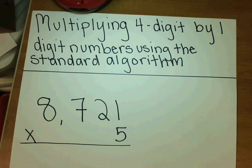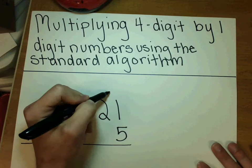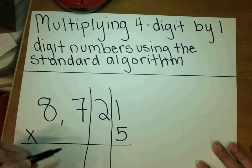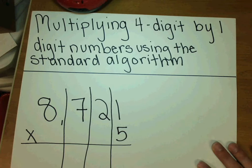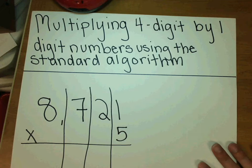We're going to jump right in on how we use the standard algorithm. One thing I always start with in class is making sure that I put some lines down. These lines just help me — and help students — keep track of place values, because as we're doing multiplication we begin to carry over into different place values, so these lines help make sure we are in the correct place value as we multiply.